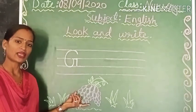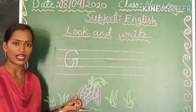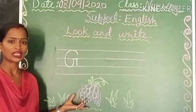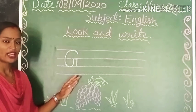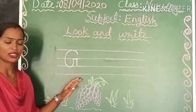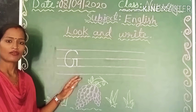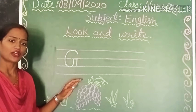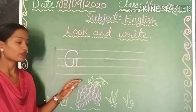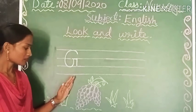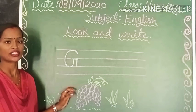अंगूर किसे कहते हैं बच्चों? अंगूर होता है एक फल। जैसे A for apple, apple means सेब, सेब भी एक फल है, fruit है वो। इंग्लिश में फल को fruit कहते हैं। और grapes को हिंदी में कहते हैं अंगूर। अंगूर भी एक फल है, फल यानी कि fruit है। फल को इंग्लिश में कहते हैं fruits। Grapes को हिंदी में कहते हैं अंगूर।